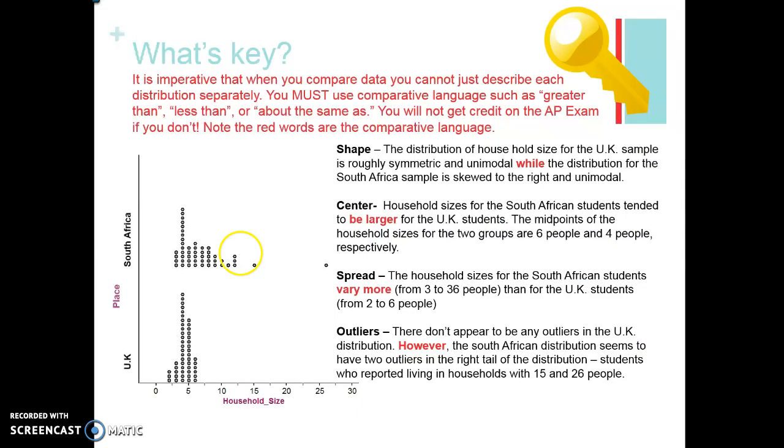Now it is imperative that when you compare data that you don't do it separately. You must have a linking sentence between the two. You need to use comparative language such as greater than or less than or about the same. You will not get credit on the AP exam if you don't use comparative language. Let's just go over two of these. Notice how we're talking about the shape of the distribution of household size for UK is symmetric and unimodal, while - there's that linking word - the distribution for South Africa is skewed to the right. Take a look at the center. Household sizes for South Africa tended to be larger than those for the UK students. The midpoints are six and four people respectively. Take a minute, look at the language between the two and come back for the next video for the rest.